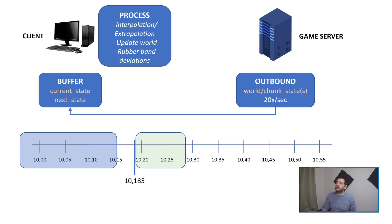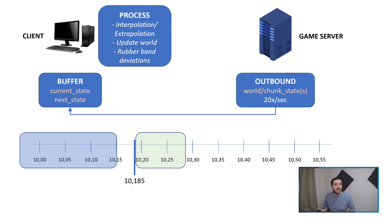That situation looks a little bit like this. We rendered 100 milliseconds in the past, indicated by the green. We need to render the world at 10.185 but we've only received world packets up to 10.15 — only packets in the past. Interpolation doesn't work anymore at this point because we don't have a future world state. What we can do is extrapolation, and that's what this tutorial is about.